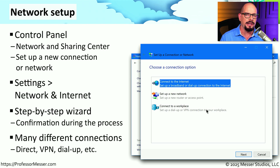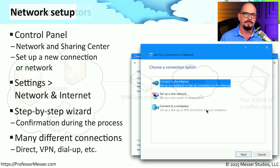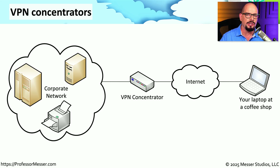And there are many different network types. You can connect directly to the network with Ethernet, you can set up a VPN connection, a dial-up connection, and more. VPN stands for Virtual Private Network, and it's a way to communicate through a public network using encryption to protect all of your data.